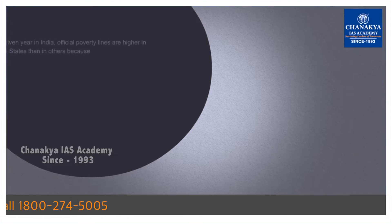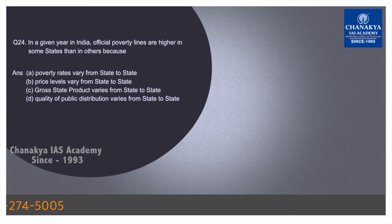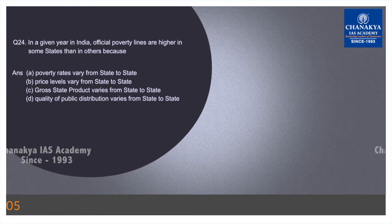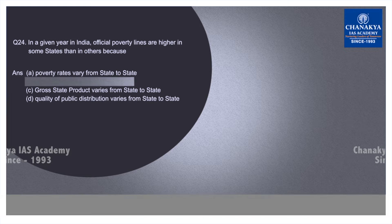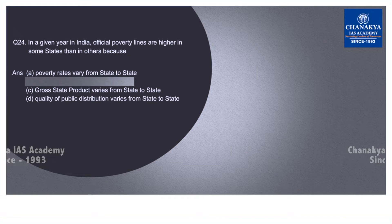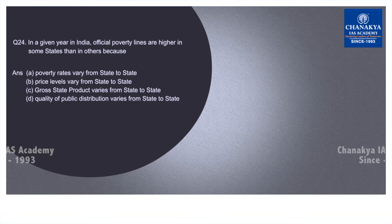Question number 24 is about why official poverty lines are higher in some states. The reason is that price levels vary from state to state. The answer for this is going to be B.